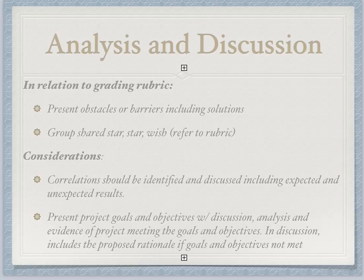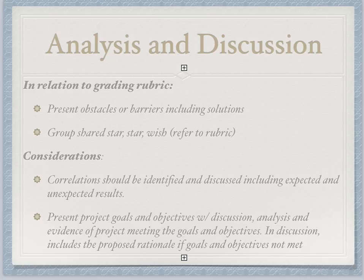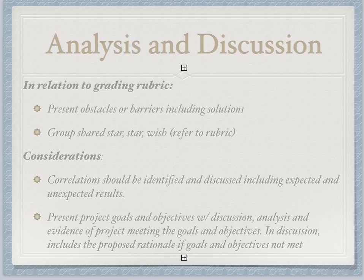Considerations as you're writing your analysis and thinking about your discussion piece: correlations should be identified and discussed, including expected and unexpected results. Sometimes we learn things we didn't plan for, or we get more insight — and that insight is sometimes as important as what you were looking for. Going back to goals and objectives, when you're presenting, you want to continue to talk about your goals and objectives in your discussion analysis and show evidence of how you met some of these goals and objectives. And if you did not meet them, propose a rationale — what do you think would have made a difference, and why do you think some objectives were not met?